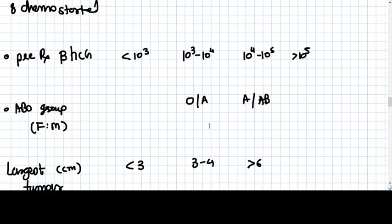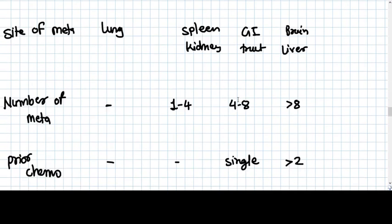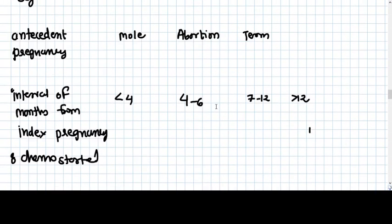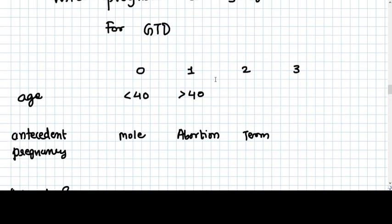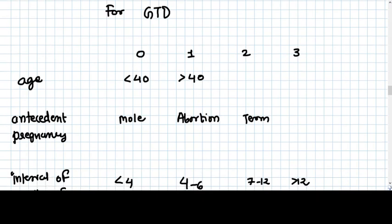A very important system here is the WHO prognostic scoring system for GTN or GTD. You need to understand that the scoring system is a deciding factor for treatment protocols. Each factor has given scores: zero, one, two, three, four. Let's start from the age. If the age is less than 40, the score is given zero. If more than 40, score is given one.